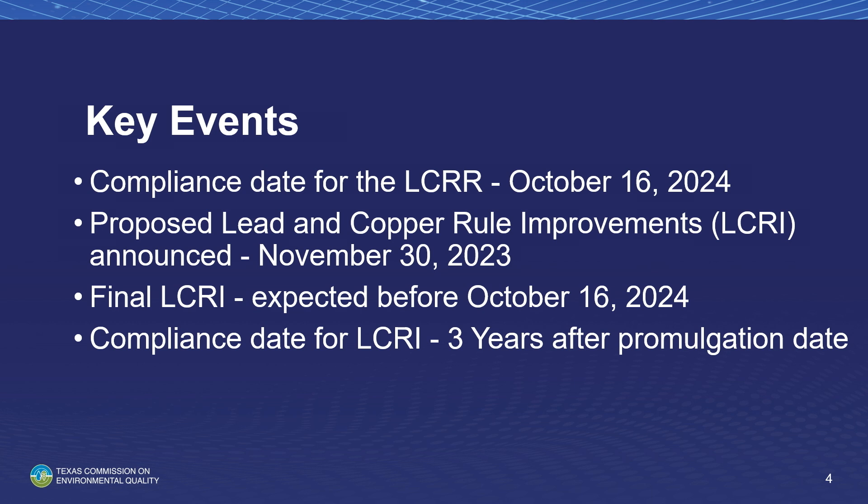Right after this presentation, my supervisor Seth Kramer will be presenting on the lead and copper rule improvements, or the LCRI. The compliance date of the LCRR — meaning the date that all systems must comply — is October 16th, 2024. Requirements for that due date are the initial lead service line inventory, public notification for affected customers identified in the LSLI, and 24-hour public notification for action level exceedances. The proposed LCRI language was announced on November 30th, 2023, with an expected finalization date before October 16th, 2024. The compliance date for the LCRI will be three years after its final publication date.